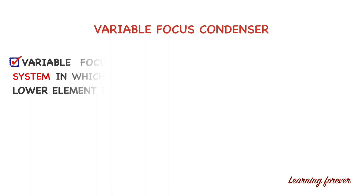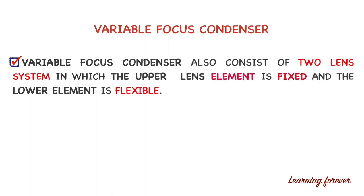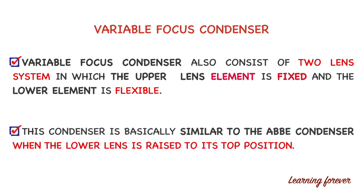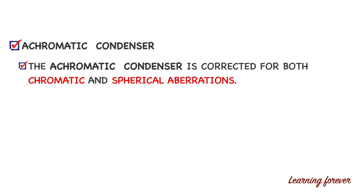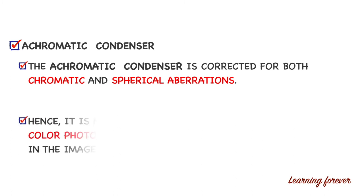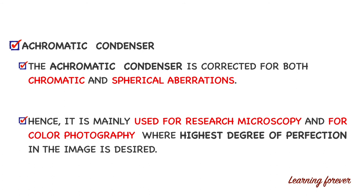The third type is the achromatic condenser, which is corrected for both chromatic and spherical aberration. Hence, it is mainly used for research microscopy and for color photography where the highest degree of perfection in the image is desired.